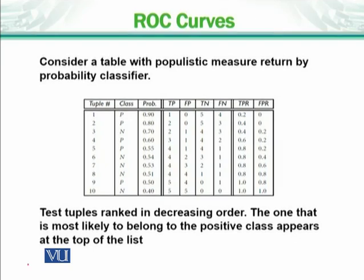We have a table with different tuples — let's say tuple 1 through 10. Against each tuple, classes are given which are either positive or negative. Then probabilities are given: the highest probabilities are for positive, the lowest are for negative. Against these, true positive, false positive, true negative, and false negative values are given.